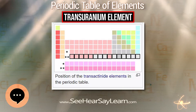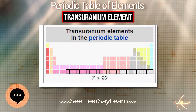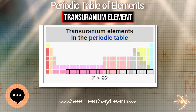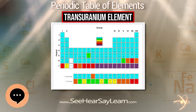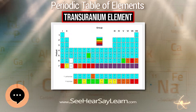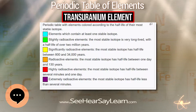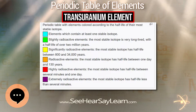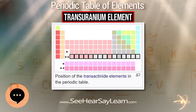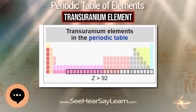Heavy transuranic elements are difficult and expensive to produce, and their prices increase rapidly with atomic number. As of 2008, the cost of weapons-grade plutonium was around $4,000 per gram, and californium exceeded $60,000,000 per gram. Einsteinium is the heaviest transuranic element that has ever been produced in macroscopic quantities.